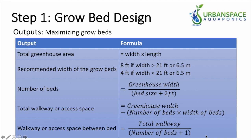Total walkway or access space is all the space left once all the beds are installed — the space available for walkway or access. In an aquaponics system, you want to be able to reach the grow beds from any direction. An eight-foot wide bed needs access on both sides to reach plants in the center. The formula is: total greenhouse width minus (number of beds times width of bed), giving you your total walkway or access space.